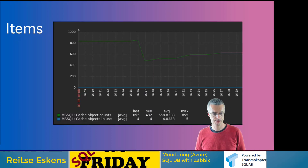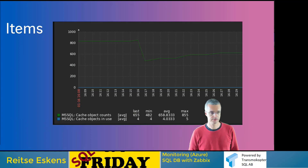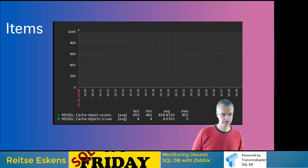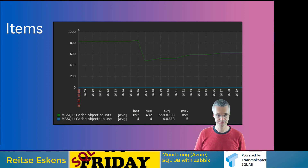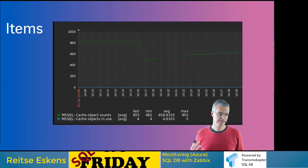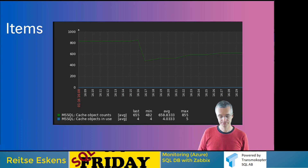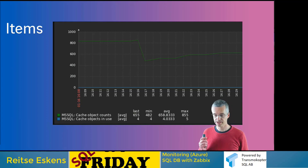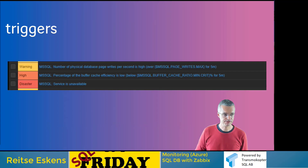From those items we can create graphs. Here's one graph derived from the cache objects data — it shows the amount of objects in the cache. Something happened around 16:15 where the object count dropped. Things like this can tell you something depending on your environment. But you want to know when something is really happening — that's where triggers come in.